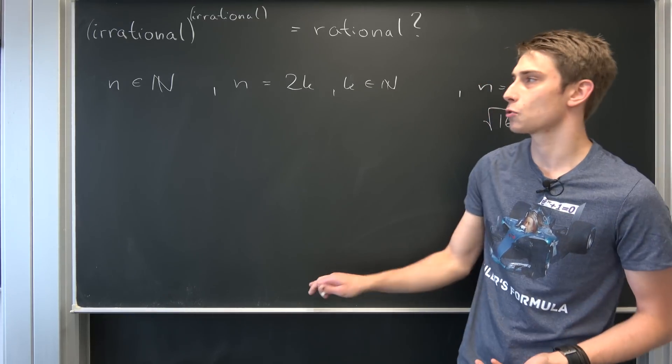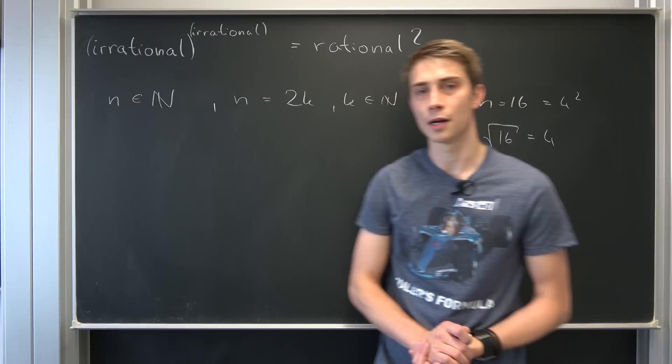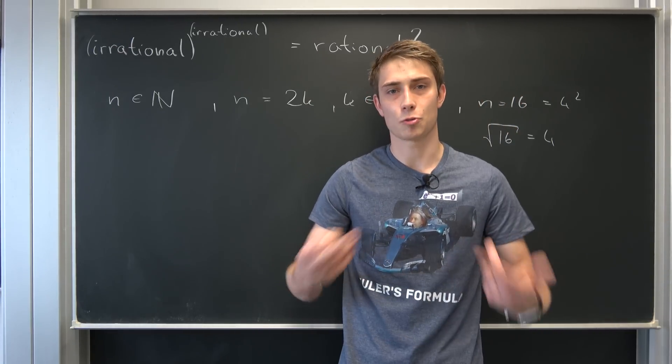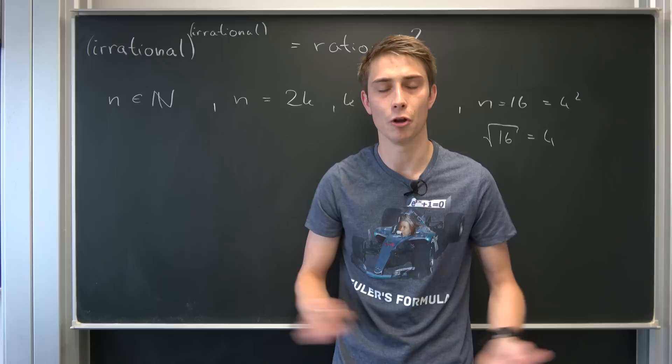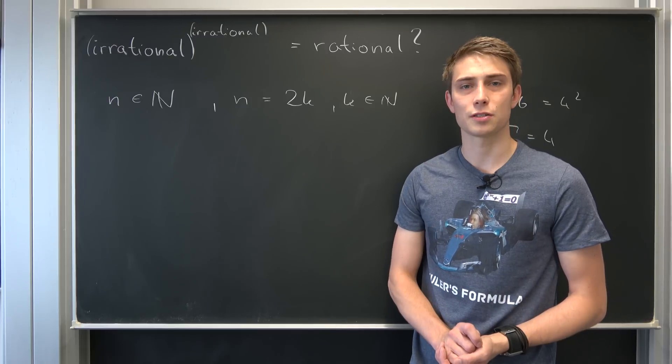And now we are just going to raise square root of n to the power of square root of n. Because if n is not a perfect square, if we take the square root of a natural number which is not a perfect square, it's going to be irrational no matter what. That's a well known fact in number theory.